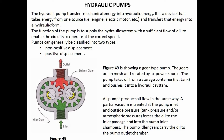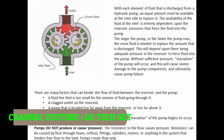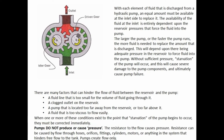The pump takes oil from a storage container (tank) and pushes it into a hydraulic system. All pumps produce oil flow in the same way: a partial vacuum is created at the pump inlet, and outside pressure (tank pressure and/or atmospheric pressure) forces the oil to the inlet passage and into the pump. With each element of fluid discharged from a hydraulic pump, an equal amount must be available at the inlet side to replace it. The availability of fluid at the inlet depends entirely upon reservoir pressure. The larger or faster the pump runs, the more fluid is needed; without sufficient pressure, starvation of the pump will occur.